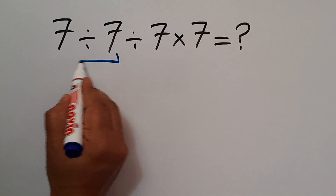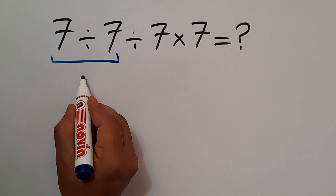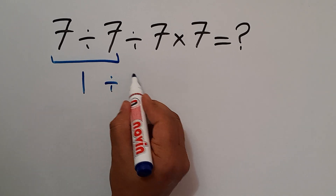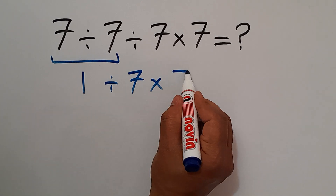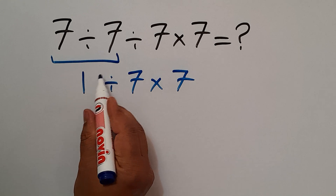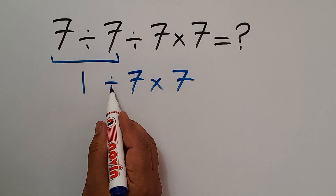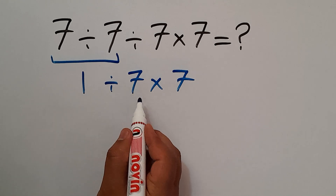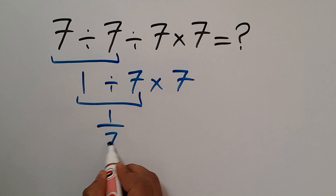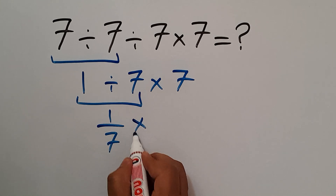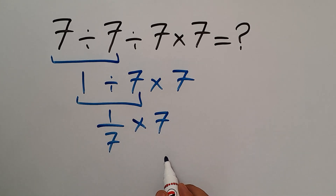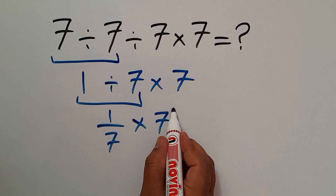7 divided by 7 equals 1, and then we have 1 divided by 7, times 7. Now we have to do this division: 1 divided by 7, which we can write as 1 over 7, and then times 7.